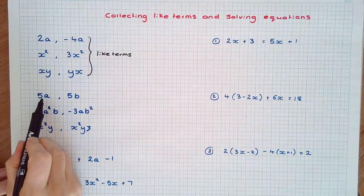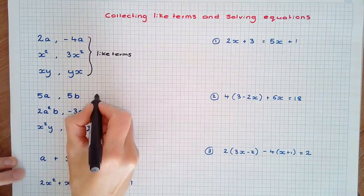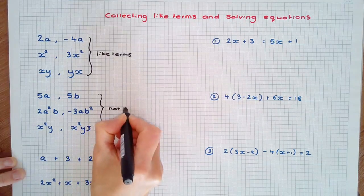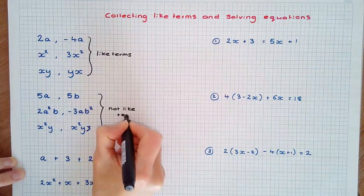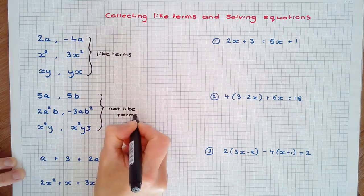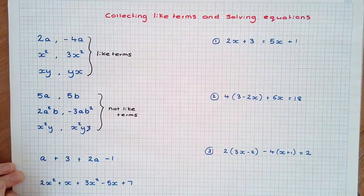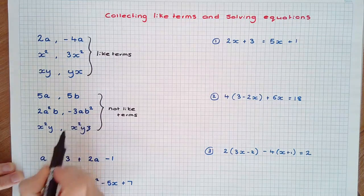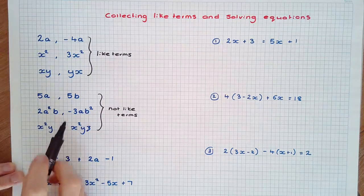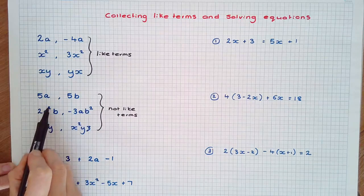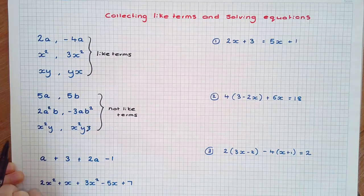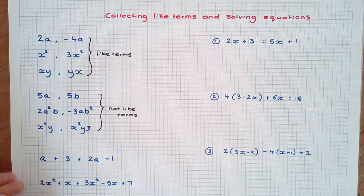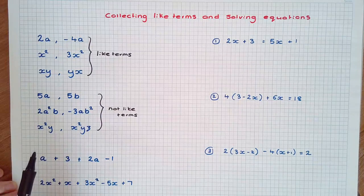However, 5a and 5b are considered not like terms because their pronumerals are different. Similarly, 2a-squared b and negative 3ab-squared are considered not like terms because a-squared and a are not like since the exponents are different, and b and b-squared are not like because the exponents are different.